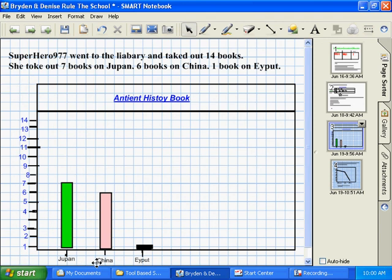Now, we've got Japan, China, and Egypt. Then, you need numbers. Numbers for the graph. And then, we need a title, such as Ancient History Book.